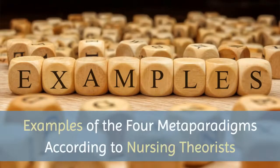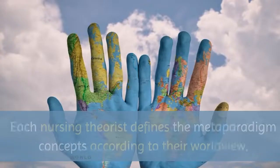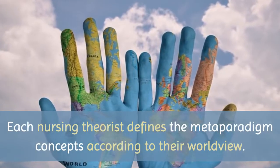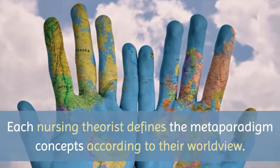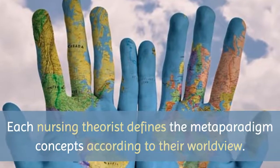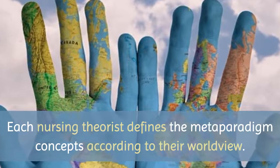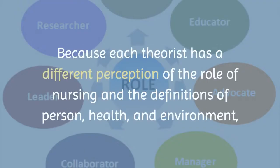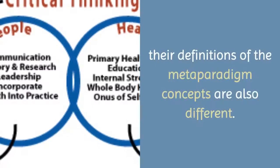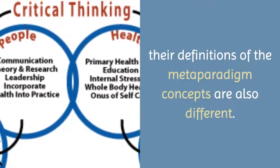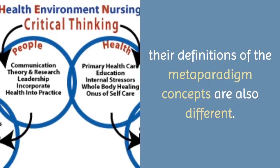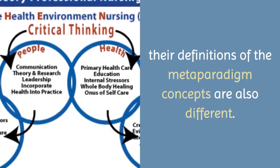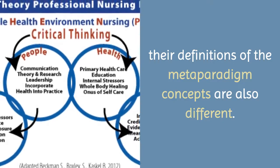Hopefully the explanations of metaparadigm and the four metaparadigm concepts are making sense. Now I'm going to give you examples of each of the four metaparadigms according to different nursing theorists. Each nursing theorist defines the nursing metaparadigm concepts according to their own perspective and worldview. Because each theorist is a unique human being, they each have a different perception of the role of nursing and the definitions of person, health, and environment. So Orem's definition of person is going to be different from Martha Rogers' definition of person, for example.